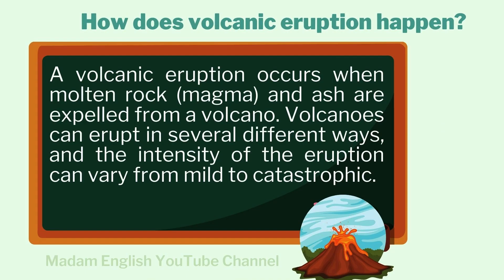How does volcanic eruption happen? A volcanic eruption occurs when molten rock, magma, and ash are expelled from a volcano. Volcanoes can erupt in several different ways, and the intensity of the eruption can vary from mild to catastrophic.